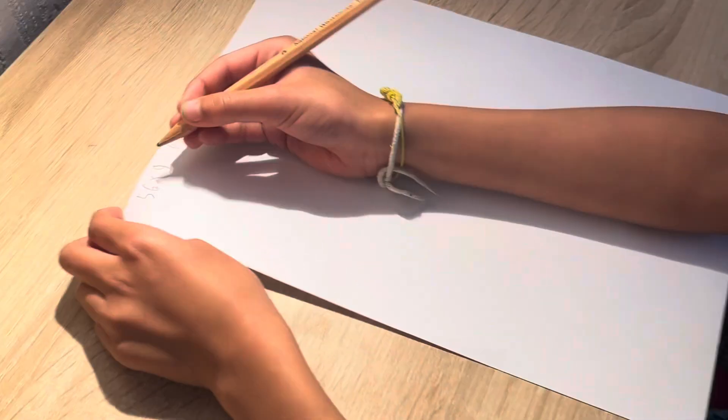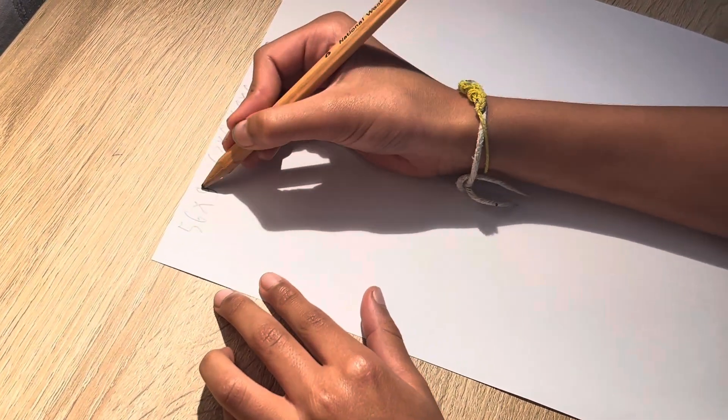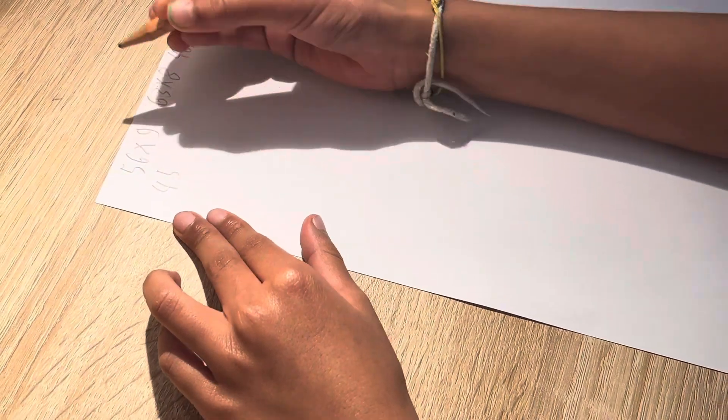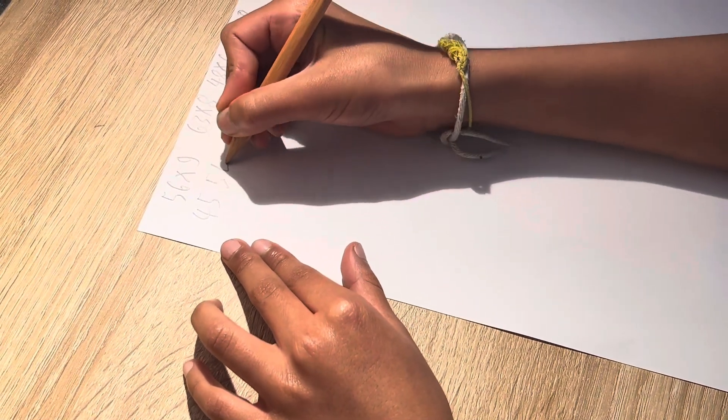So now I'll show you how to do this. First you do 5 times 9 which is 45. Then you do 6 times 9 which is 54.